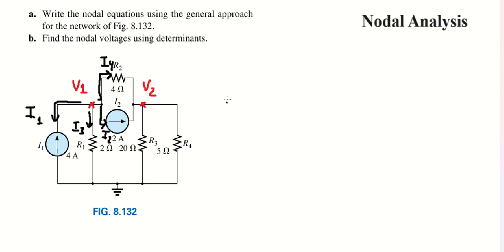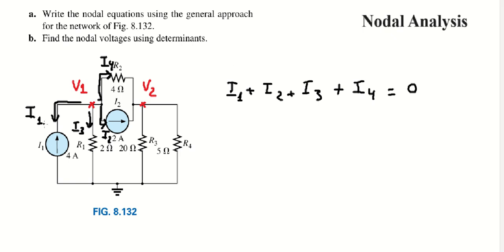We need to know that I number one plus I number two plus I number three plus I number four should be equal to zero. For I number one, the arrow goes in this way, however we go down in the opposite direction, so that means we have negative four.